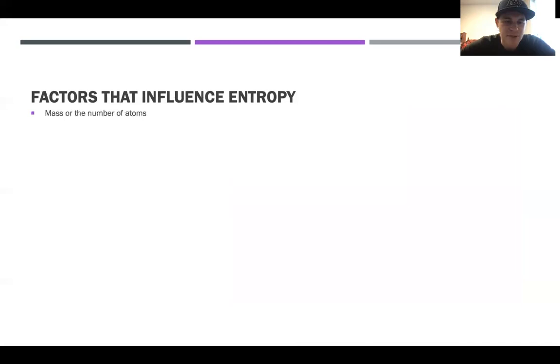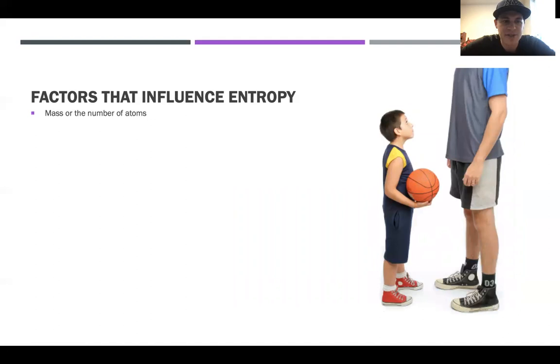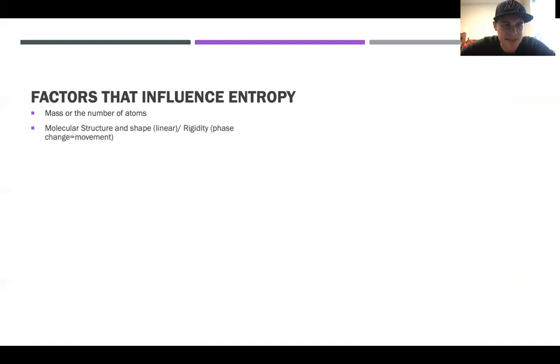Next up is the factors that influence entropy. The first factor that influences entropy is the mass or number of atoms. A good way to think about it is you have little kids and they can cause a mess, right? But when you're bigger and older, you have more access to things and it's a lot easier to make a bigger mess or worse mess, more chaos, more disorder. So that's kind of an easy way to remember that one.